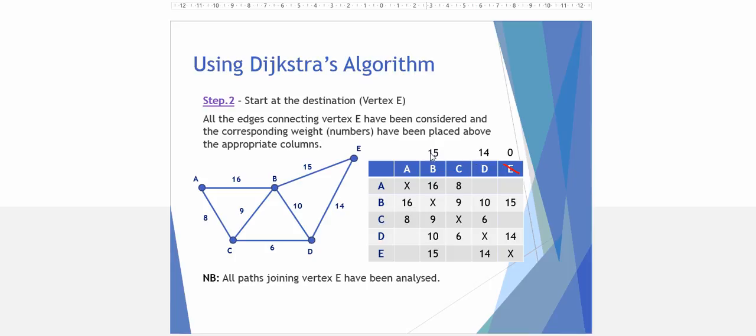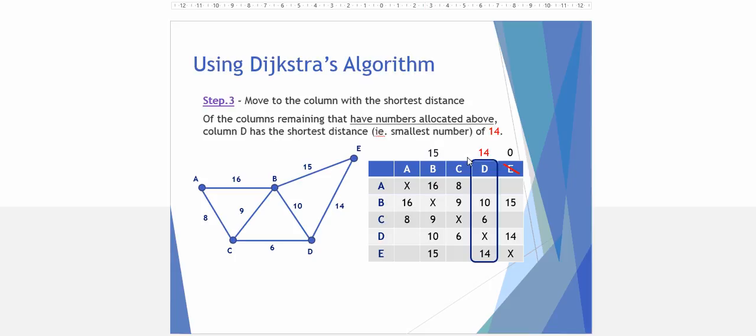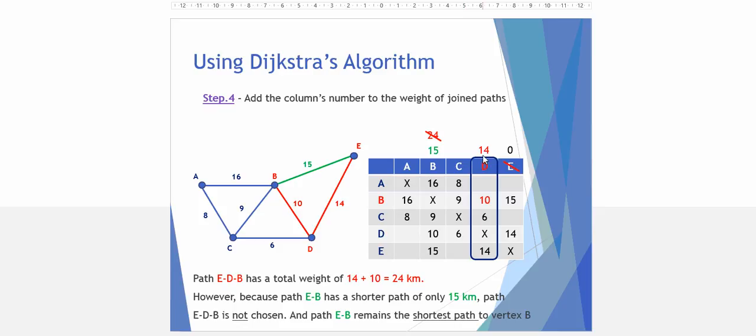We look at the two numbers we have here and we next select the column with the lowest number. So the column with the lowest total is column D. We then look at the values in D. From D to B, there is a total of 10. But to get to D we have already taken 14 from E. So 14 plus 10 gives me 24. So that's another alternative way to get from E to B, however 15 is the shorter distance. Therefore, path E-D to B has a total of 24, but because E to B already has a shorter pathway of 15, we don't consider this one.